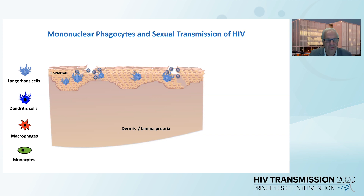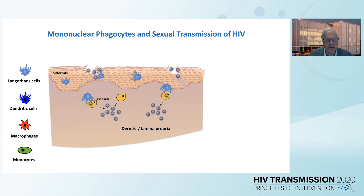It's hypothesized, and to some extent shown, that after the virus interacts with these cells in the epidermis, they can migrate into the dermis and transfer the virus to the major target cell of HIV, the CD4 T cells.